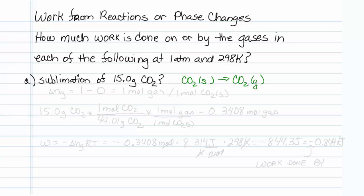When we figure out delta NG for this, we have one mole of gas when we're done, no moles when we start. So that is one mole of gas, but that is per one mole of CO2 solid.